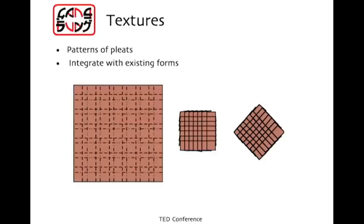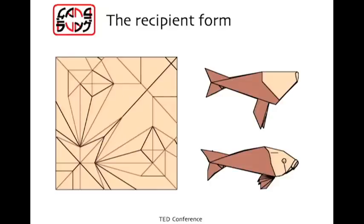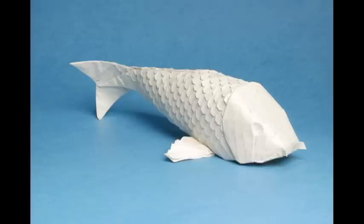So in origami, to obey these laws, we can take simple patterns, like this repeating pattern of folds called textures. And by itself, it's nothing. But if we follow the laws of origami, we can put these patterns into another fold that itself might be something very simple. But when we put it together, we get something a little different. So this fish, 400 scales. Again, it is one uncut square, only folding.